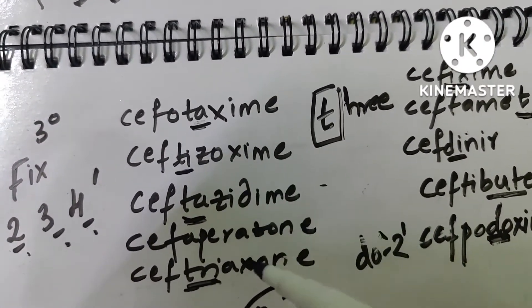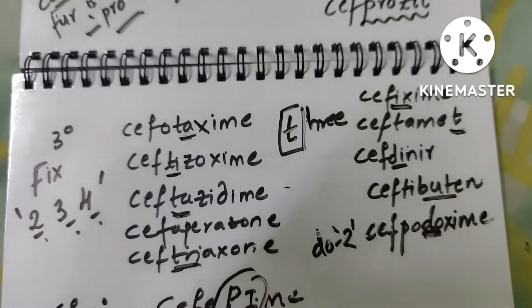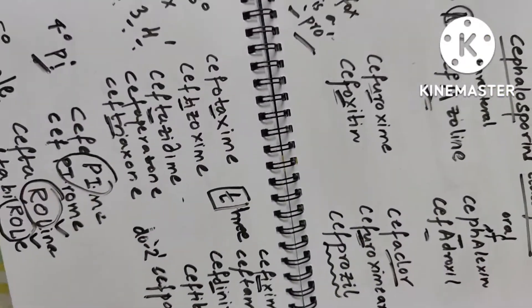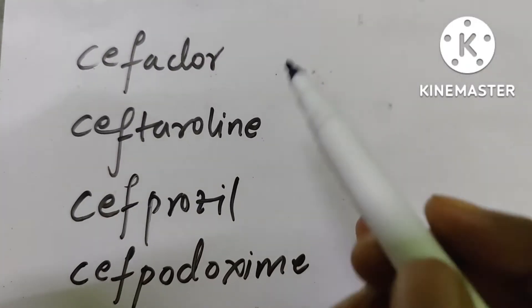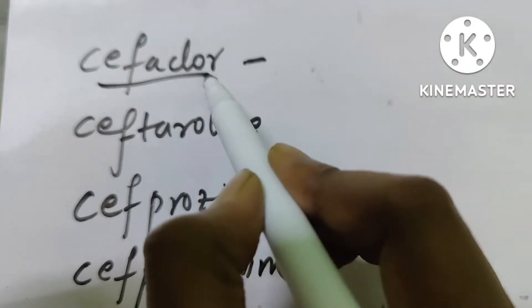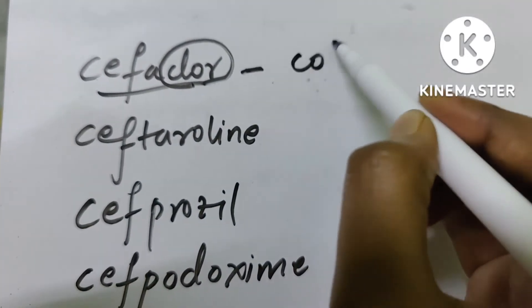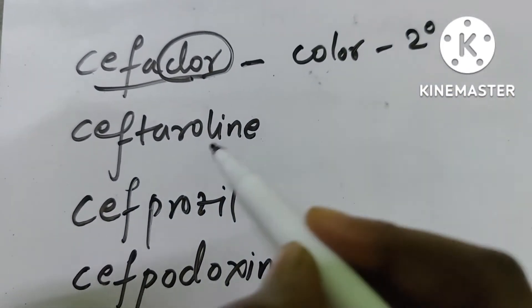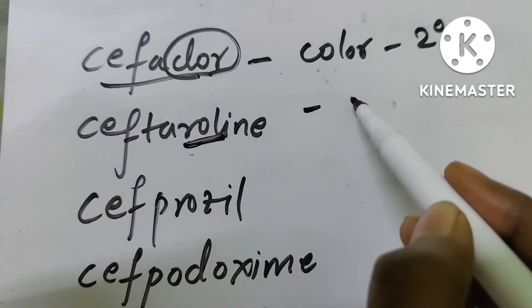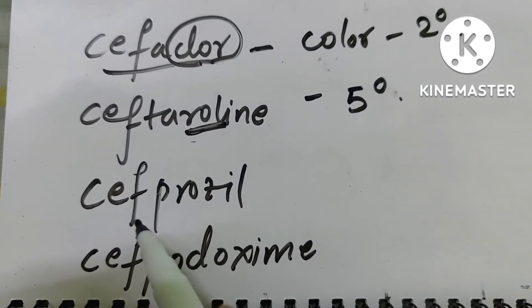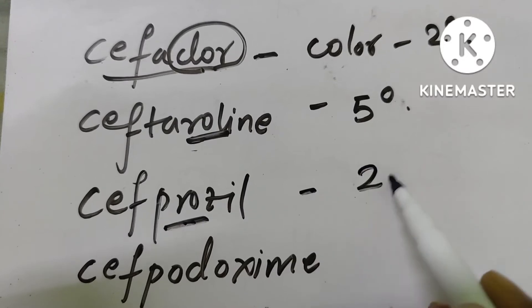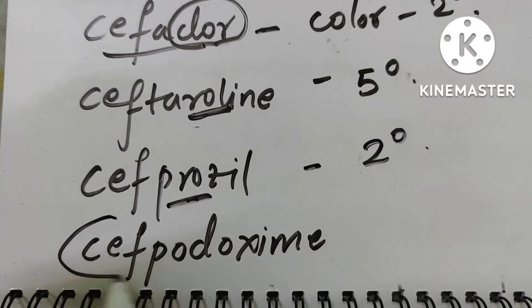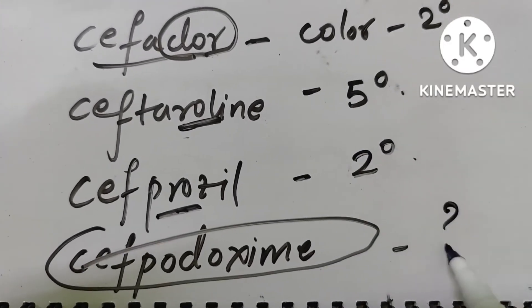Let us try to answer these. So cefaclor - cefaclor, 'clor' is there, right? So color, color means that is second generation. And answer the cefpodoxime and cefuroxime in the comment section.